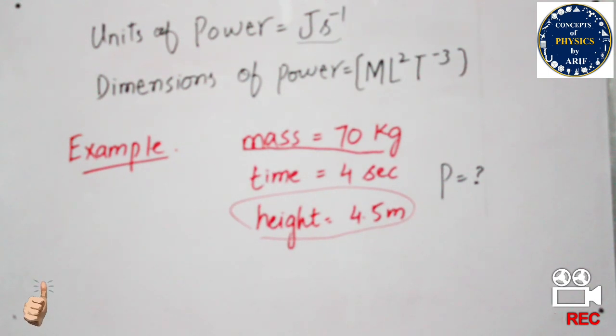We know that the formula to calculate power is P equals work done in some time or in some instant of time. So the formula of power is M G H, because in this case the body is going in the upward direction and the action of gravity will also act on it over time. So the mass is 70 kg multiplied by G which is 9.8, multiplied by H which is 4.5 meters, divided by time which is 4 seconds.